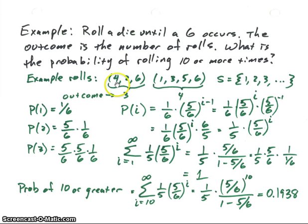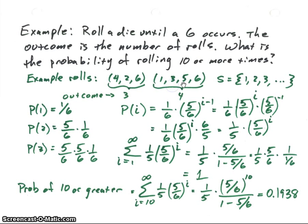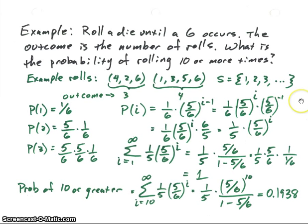Here are some example rolls. Suppose we rolled a four, then a two, then a six — we stop there because we've rolled a six, and the number of rolls is three, so the outcome is three. Another example: we roll a one, three, five, then a six, so we stop at four rolls, giving outcome four. Our sample space is just the number of rolls possible: one being the minimum, then two, three, and so on to infinity.